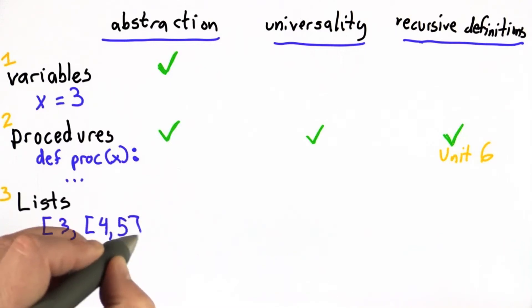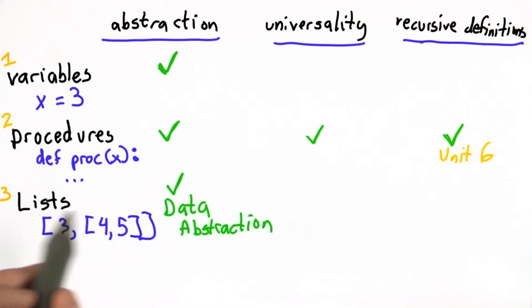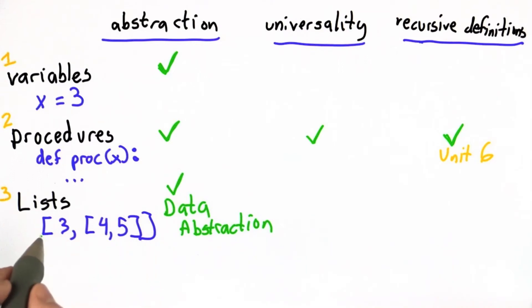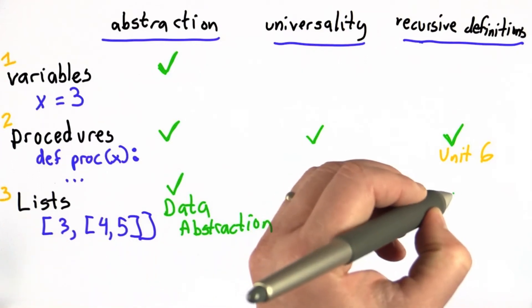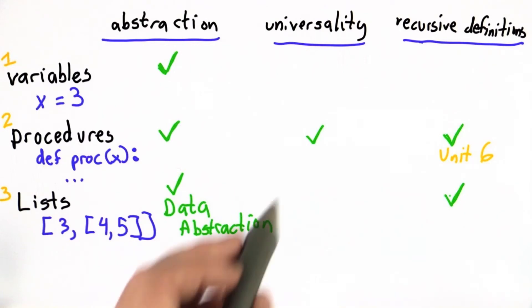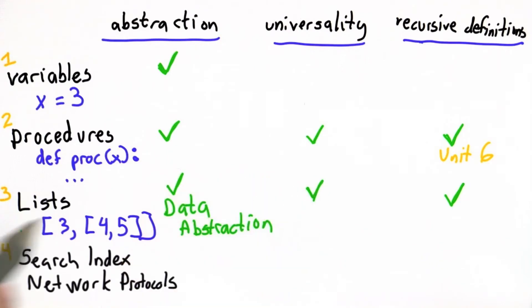The main new thing in Unit 3 was lists. This is a kind of data abstraction. You can use a list without knowing the details of how Python implements a list. It also can be a recursive definition. We can have lists that have elements that are other lists. So it certainly is useful for recursive definitions.